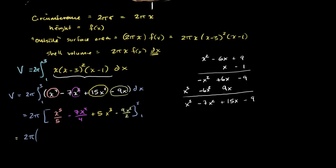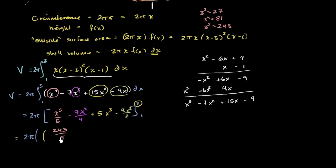Let's first evaluate everything at x = 3. We have 3⁵/5. 3³ = 27, 3⁴ = 81, 3⁵ = 243, so that's 243/5. Then 3⁴ = 81; 81 × 7 = 567, so we get -567/4. This is going to be really painful arithmetic, but we'll power through it.